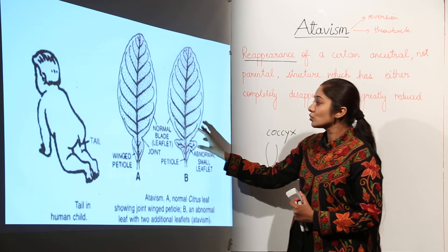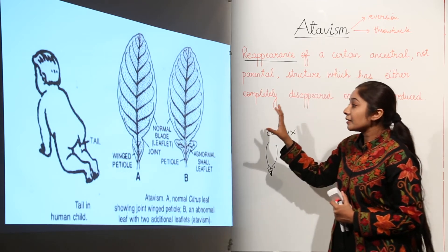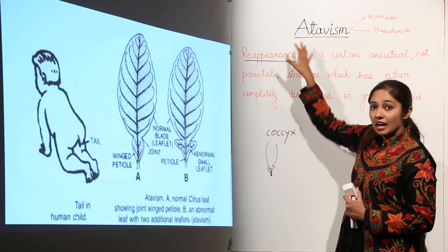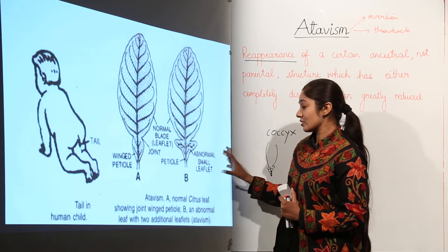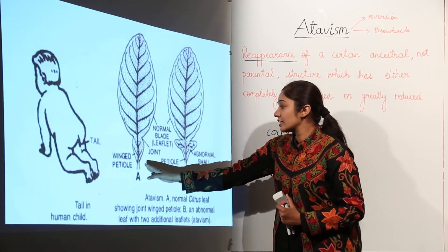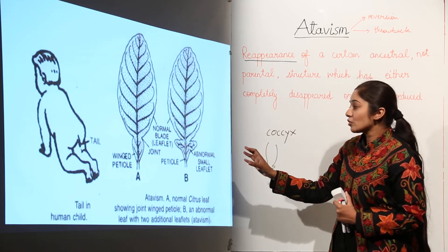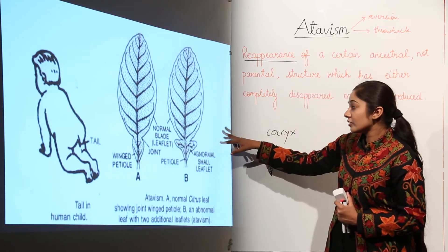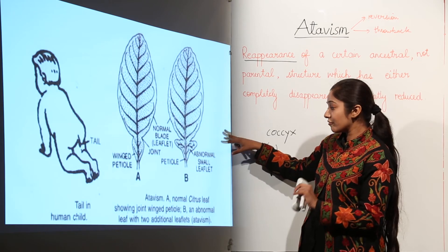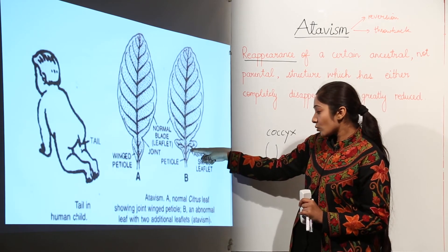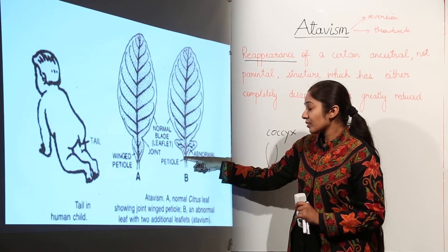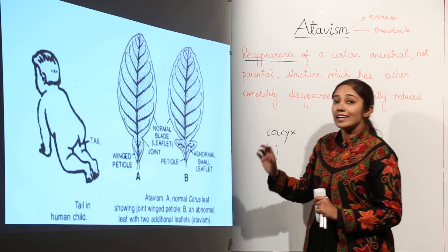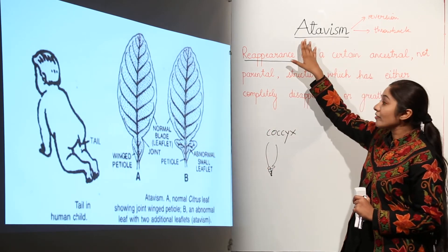Let's move back to the previous slide. As you can see, two leaves are shown here. Plants also show atavism. I take an example of a citrus leaf. This is a normal citrus leaf which shows a winged petiole. And this other leaf is not a normal citrus leaf, because it is showing some additional leaflets. The presence of these additional leaflets on the citrus leaf is an example of atavism.